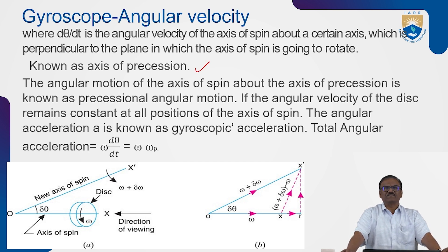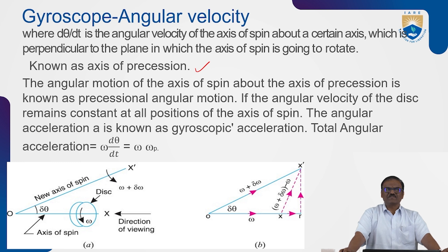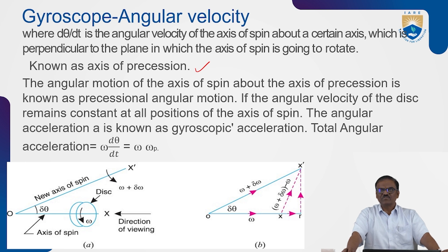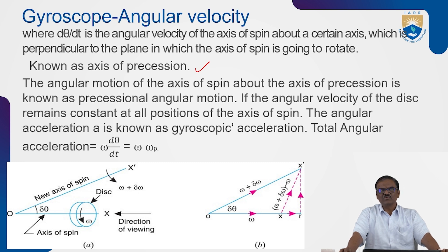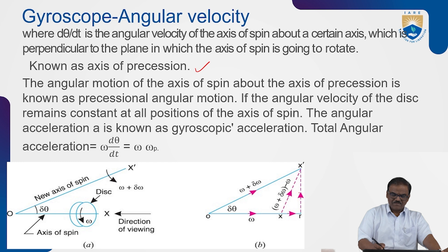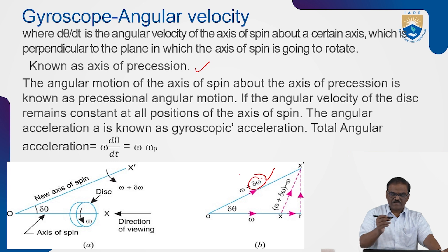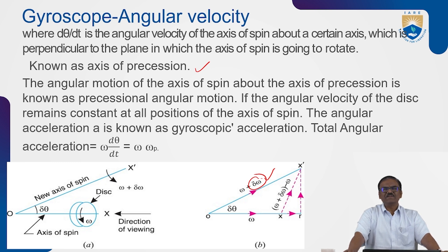The angular motion of the axis of spin about the axis of precession is known as precessional angular motion. If the angular velocity of the disk remains constant at all positions of the spin, the angular acceleration is known as gyroscopic acceleration. Total acceleration is given as omega times d-theta/dt, which equals omega times omega-p, where omega-p is the precessional angular velocity.